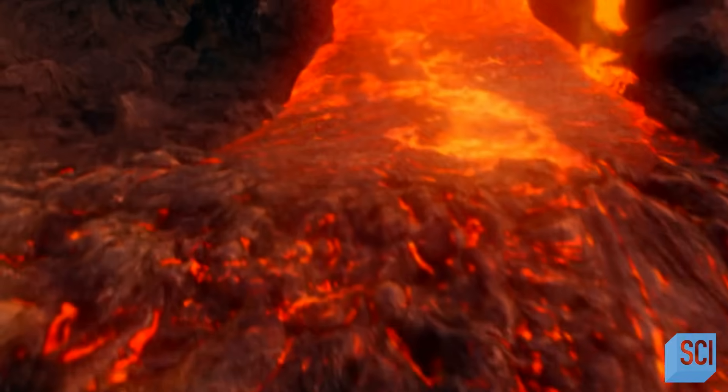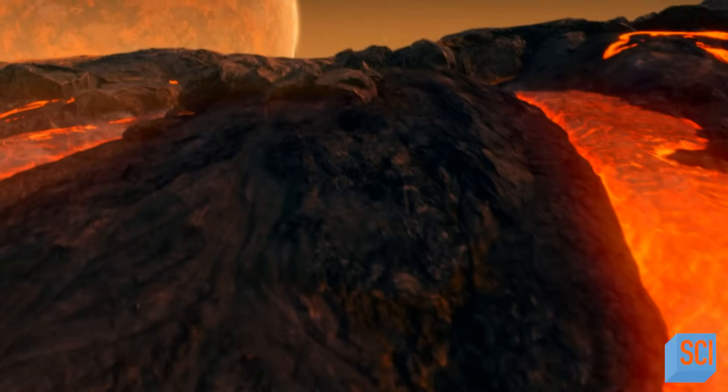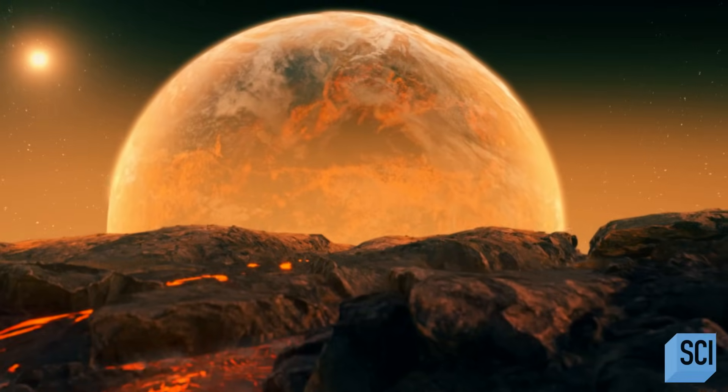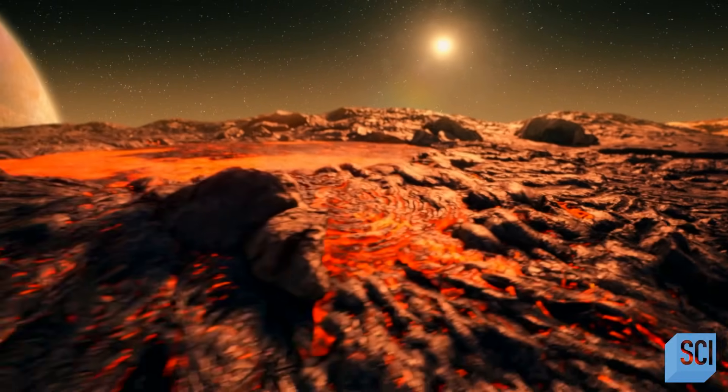But the similarities of the twin molten worlds were more than skin deep. Similar to the Earth, the moon, just after its formation, would have been very, very hot. You would have had a really hot, molten body solidifying at the surface, building a crust, and solidifying from the outside in.